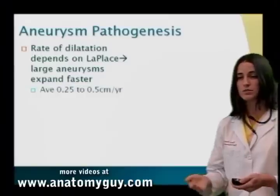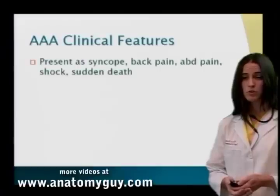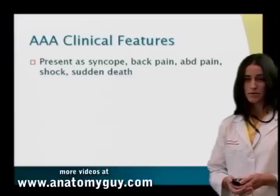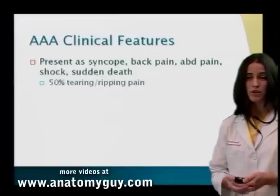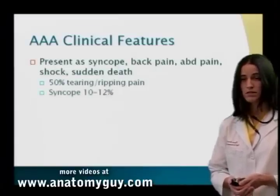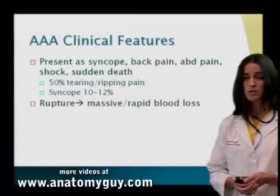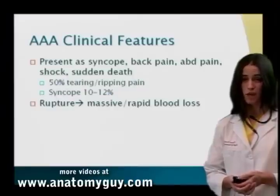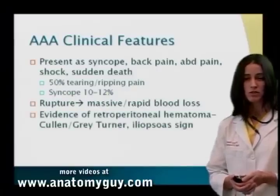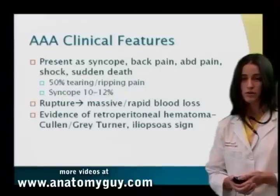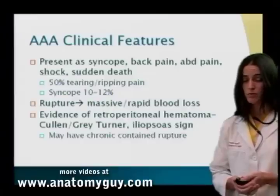Features of AAA: patients may present with syncope, back pain, abdominal pain, shock, or sudden death. 50% of patients may present with a tearing or ripping type pain; 10 to 12% may present with syncope. With rupture, patients present with hypotension, massive and rapid blood loss, and decompensate very quickly. You may see evidence of retroperitoneal hematoma such as Cullen's sign, Gray Turner sign, or iliopsoas sign. They may have a chronic contained rupture and not be hemodynamically unstable in that moment.